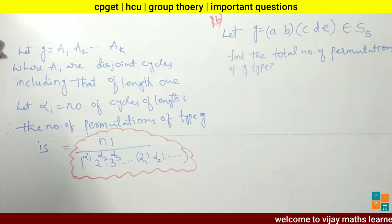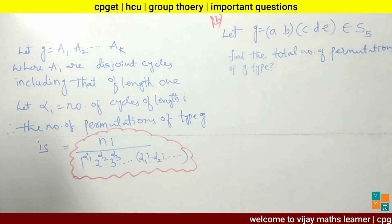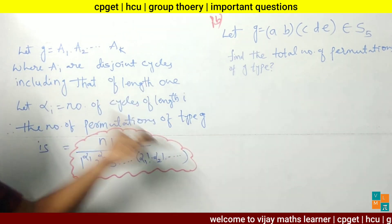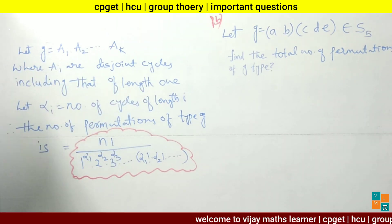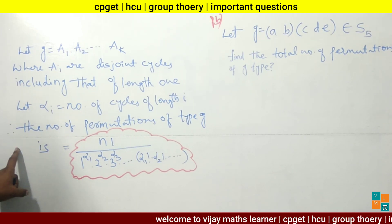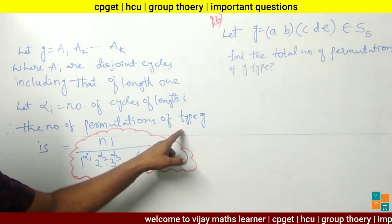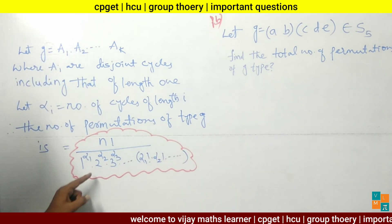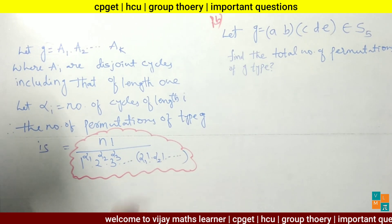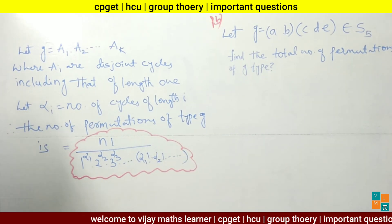Now let's see the third result. Let G equal (A1, A2, ..., AK) where A are disjoint cycles, including cycles of length 1. Let alpha_i equal the number of cycles of length i. The formula to find the number of permutations of type G is: n factorial divided by (1^α1 · 2^α2 · 3^α3 · ... ) into (α1! · α2! · α3! ...).